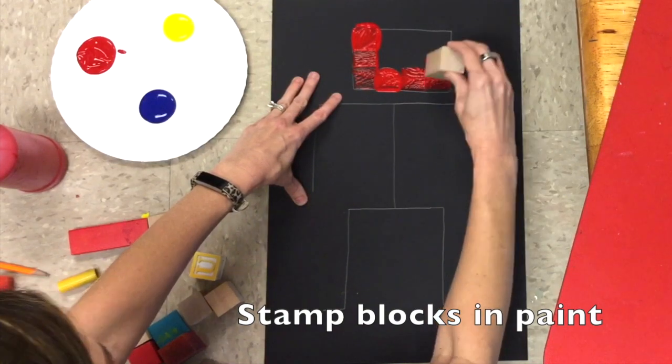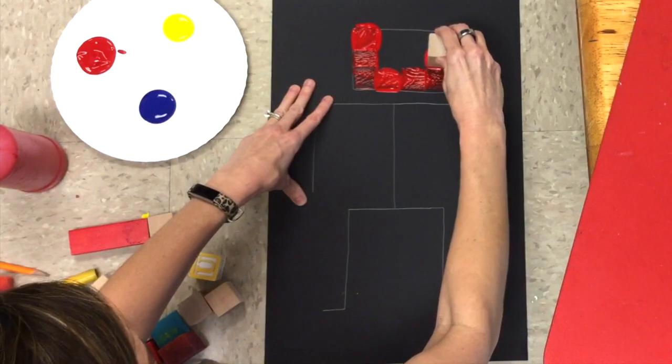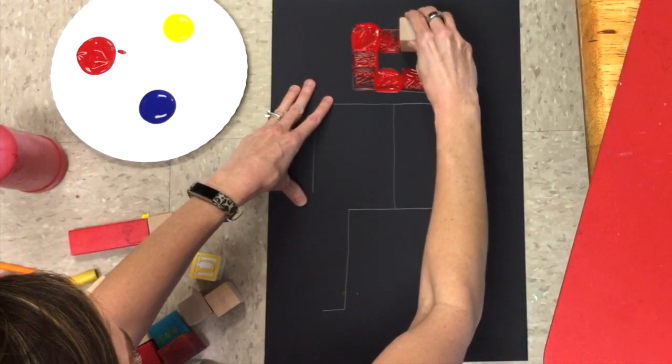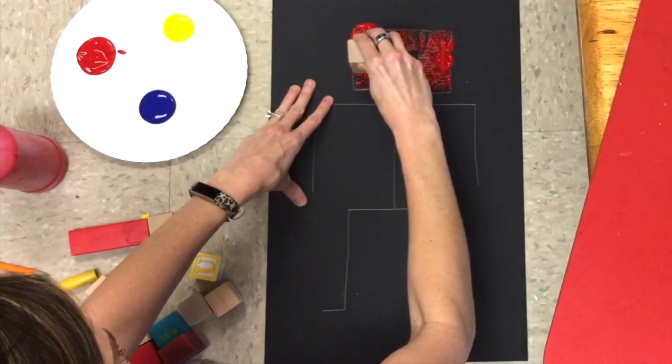So you can stamp squares. You can stamp circles. You can make eyes if you'd like. And you're going to fill up your whole paper with stamps until you're all the way done.